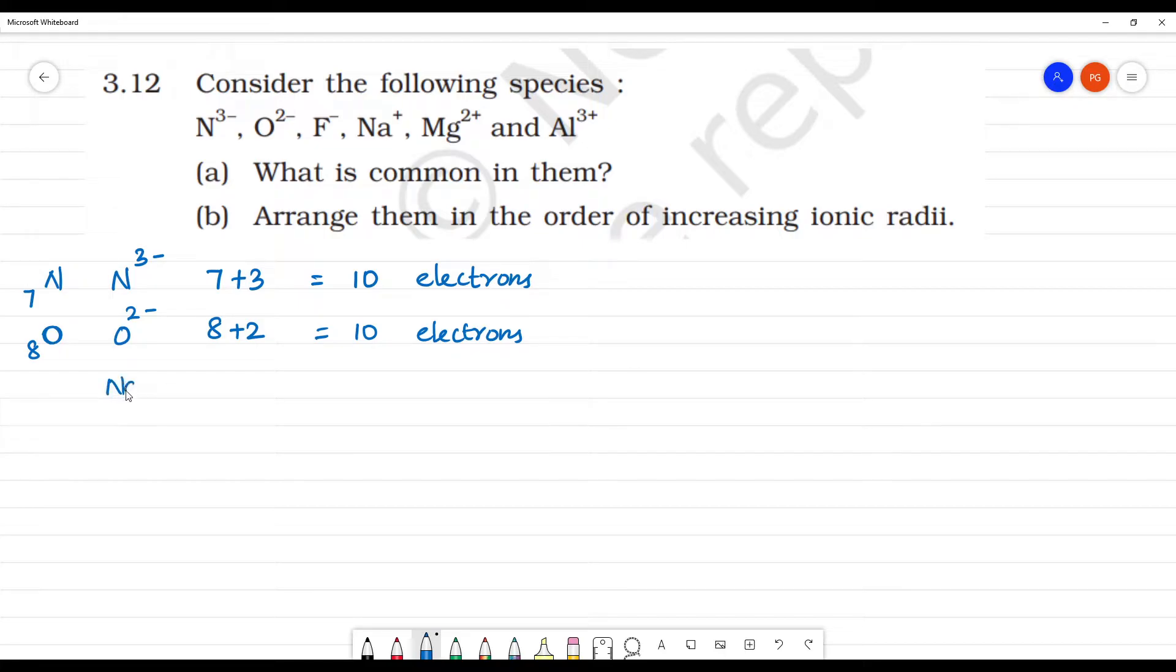Next, Na⁺. Sodium is atomic number 11. Plus charge means 11 minus 1 electron. That equals 10 electrons.